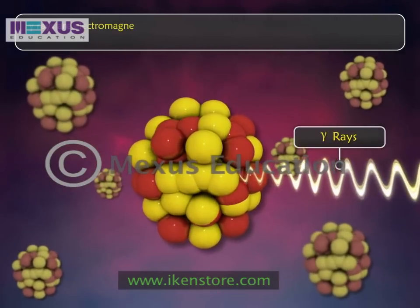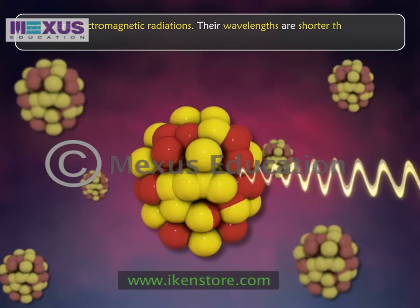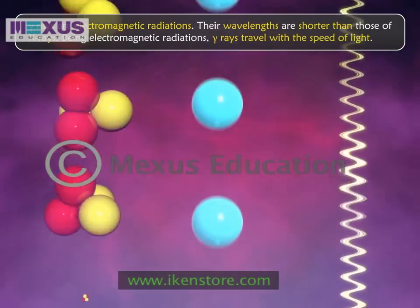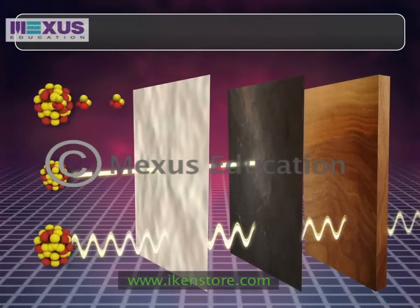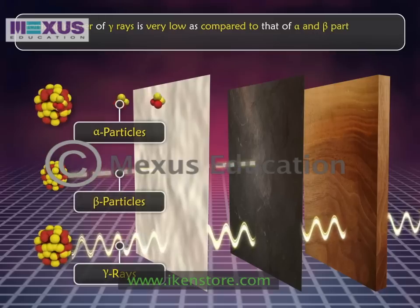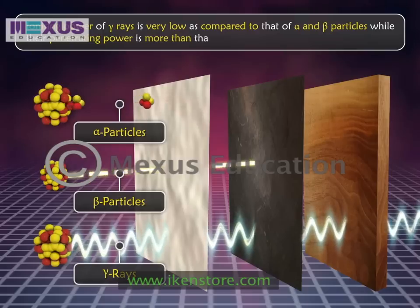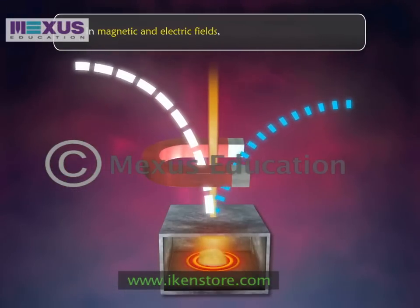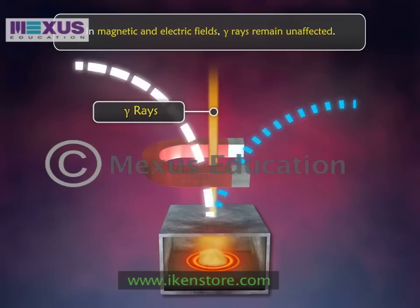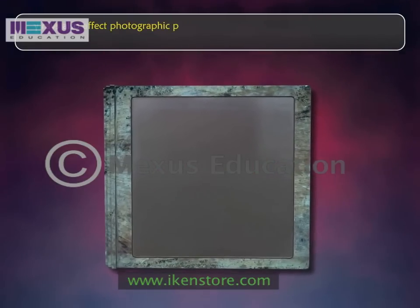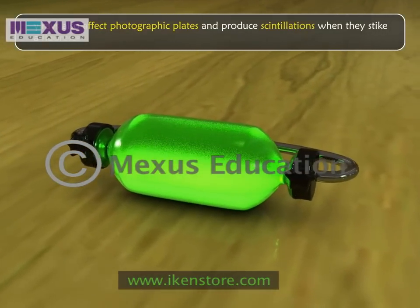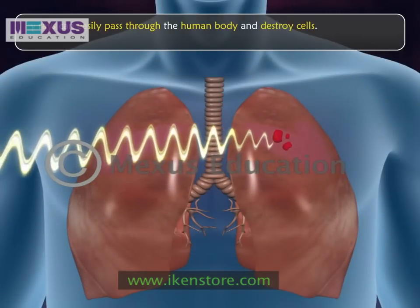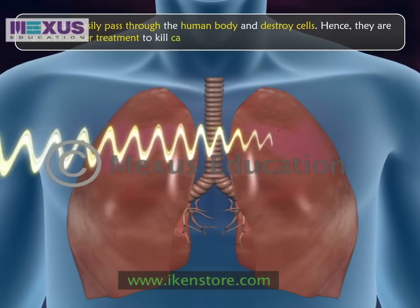Gamma rays are electromagnetic radiations with wavelengths shorter than those of X-rays. Being electromagnetic radiations, gamma rays travel with the speed of light. Their ionizing power is very low compared to alpha and beta particles, while their penetrating power is greater than that of both alpha and beta particles. In magnetic and electric fields, gamma rays remain unaffected. Gamma rays affect photographic plates and produce scintillations when they strike a fluorescent material. Gamma rays can easily pass through the human body and destroy cells; hence they are used in cancer treatment to kill cancer cells.